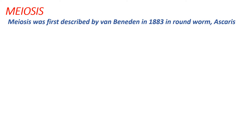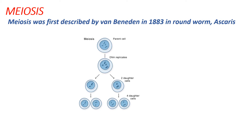Meiosis was first described by Van Benedin in 1883 in the roundworm Ascaris. In brief, meiosis is a process in which the parent cell undergoes changes and produces four daughter cells. These four daughter cells are identical to the parent cell in shape and size, but not in chromosome content. The chromosome content of the daughter cells is half that of the parent cell — if the parent cell is diploid, then the daughter cells are haploid.